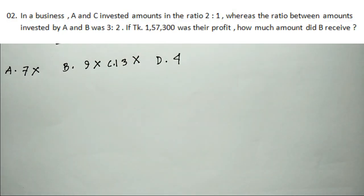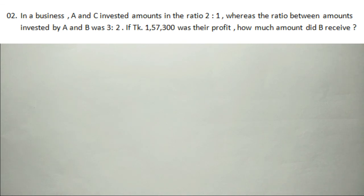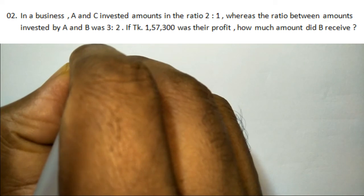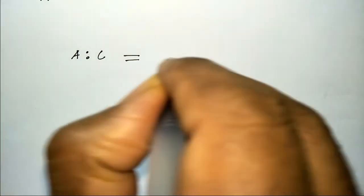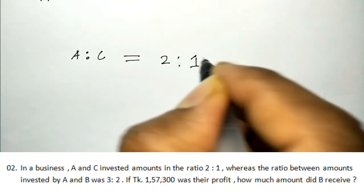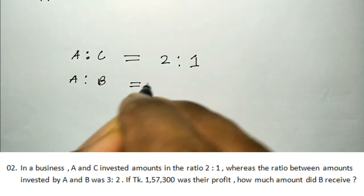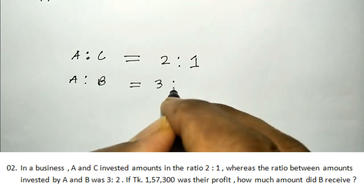Next question: a business invested amount in ratio 2 is to 1. The ratio between amounts invested by A and B was 3 is to 2. If total profit was a certain amount, how much did B receive? The invested amount ratio is 2 is to 1; A to B ratio is 3 is to 2.